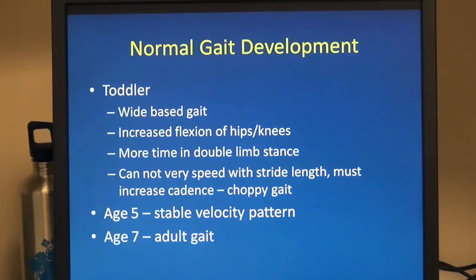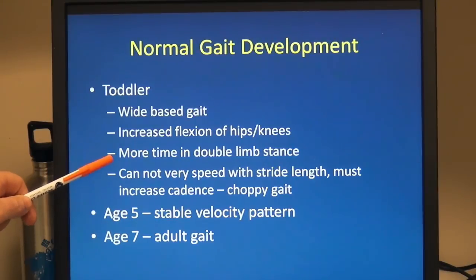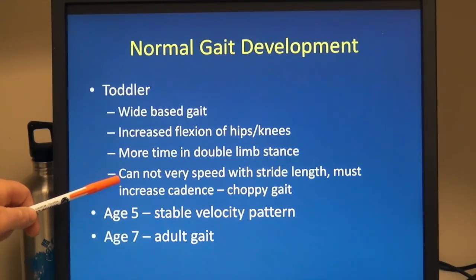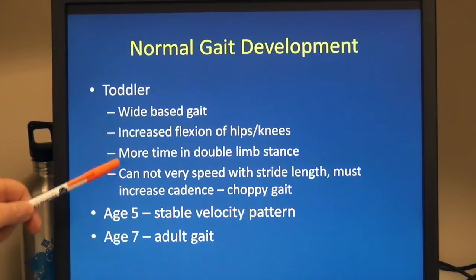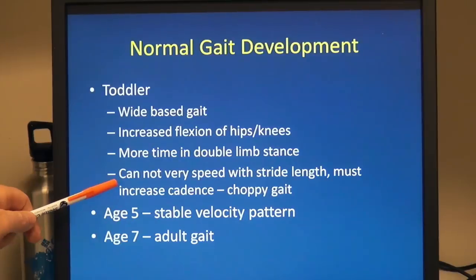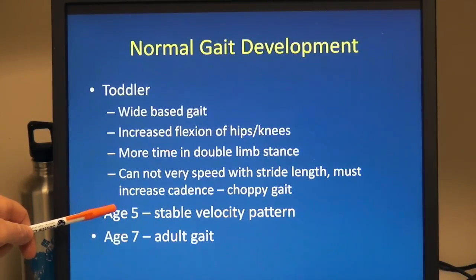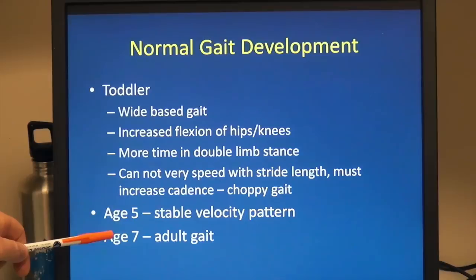In looking at basic gait development, toddlers have a wide-based gait, classically, and they walk with increased flexion of their hips and knees. They spend more time in double stance than a typical adult gait pattern, and they can't vary their speed by changing stride length, so they must increase their cadence, giving them the choppy gait you often see. By age five they begin developing a stable velocity pattern, and by age seven they have an adult-type gait pattern.